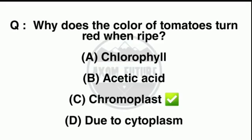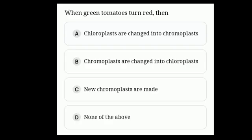Question 1: Why does the color of tomatoes turn red when ripe? The right answer is C, Chromoplast. When green tomatoes turn red, chloroplasts are converted into chromoplasts.